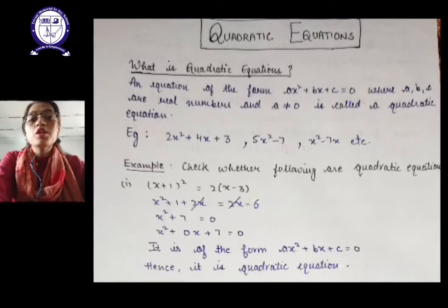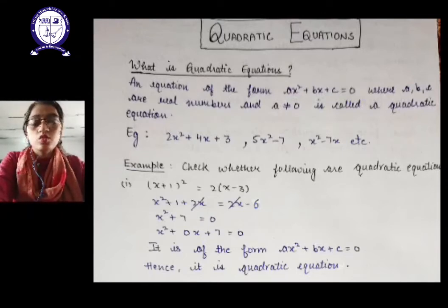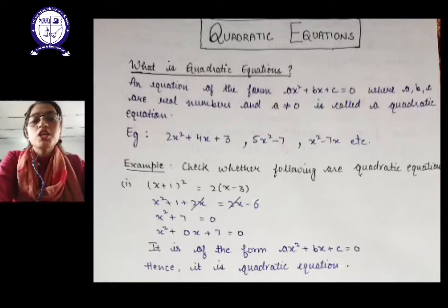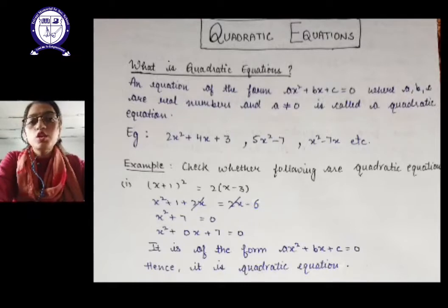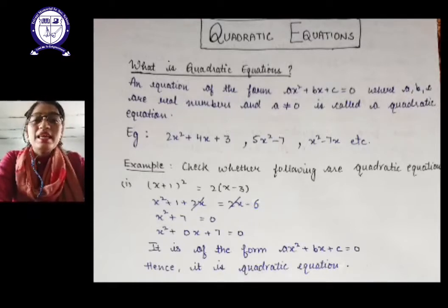It is very important to always remember that a can never be equal to 0. If we make a equal to 0 in the equation ax² + bx + c = 0, then the term of x² will get eliminated — 0 into x² will be 0 — and we are left with bx + c = 0, which is a linear equation.